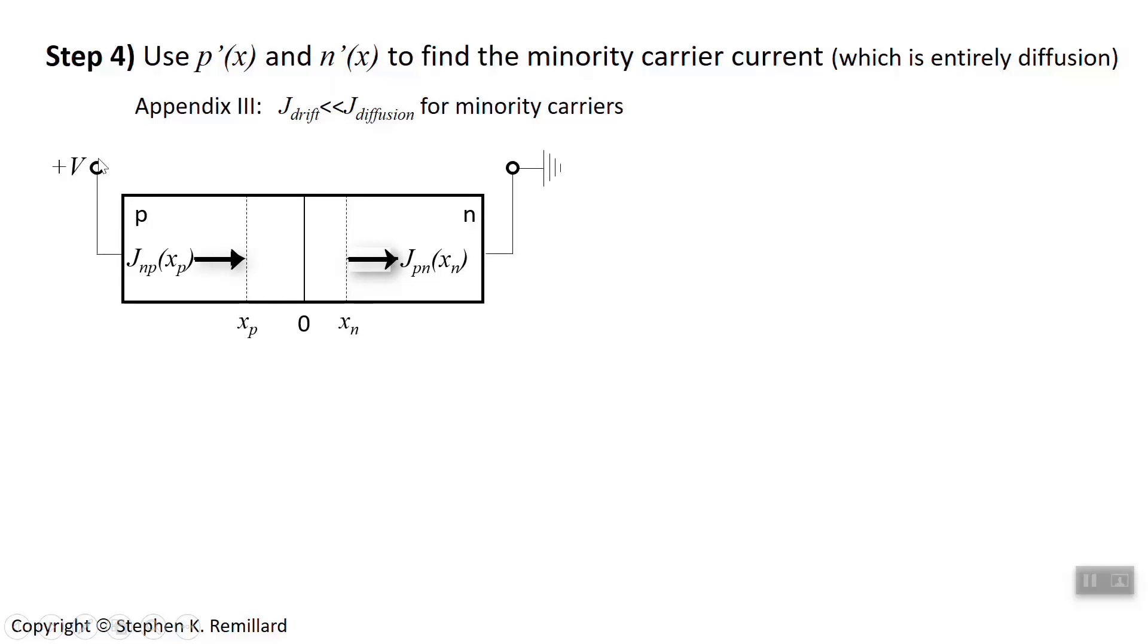So let's set up our semiconductor again. And we have our positive and negative electrodes attached to the p and the n type. And I depicted currents. So J sub np is the current of electrons in the p side. Now electrons want to go towards a positive voltage. And so they are.